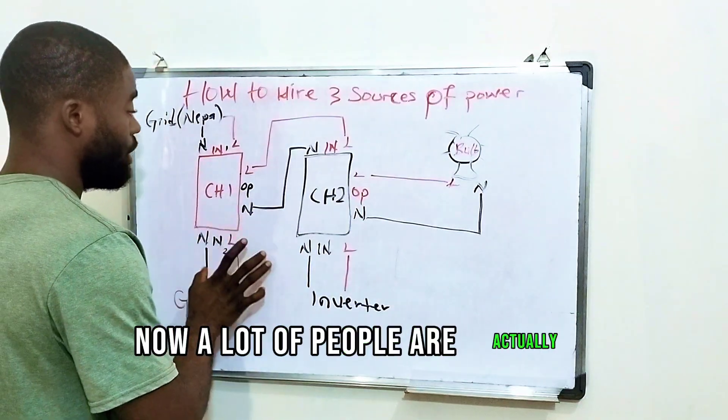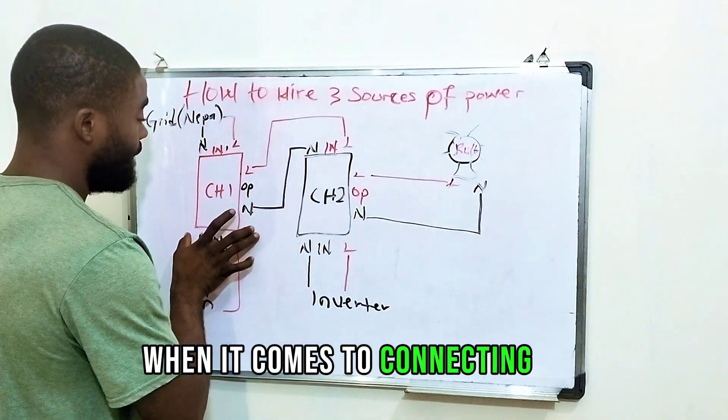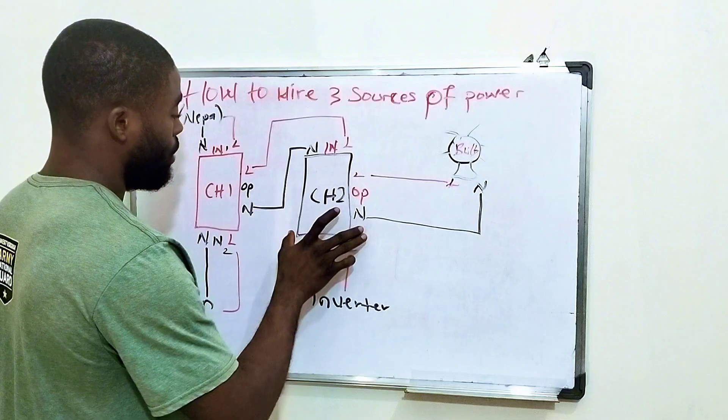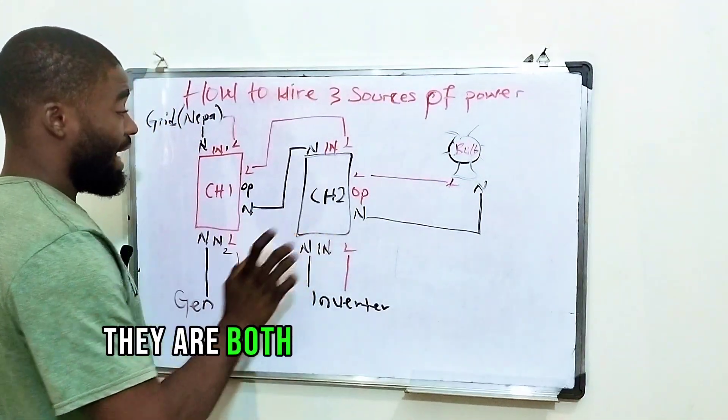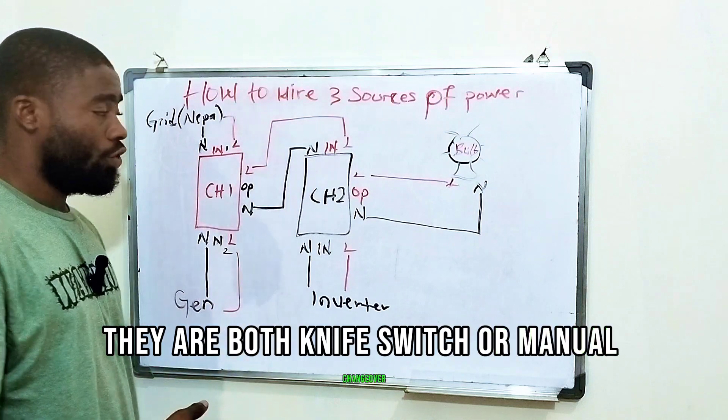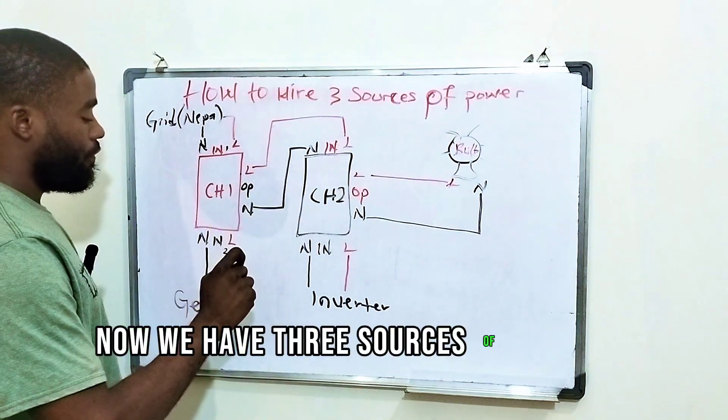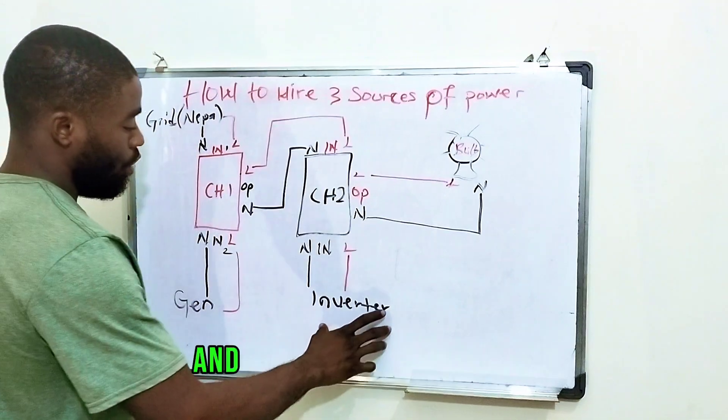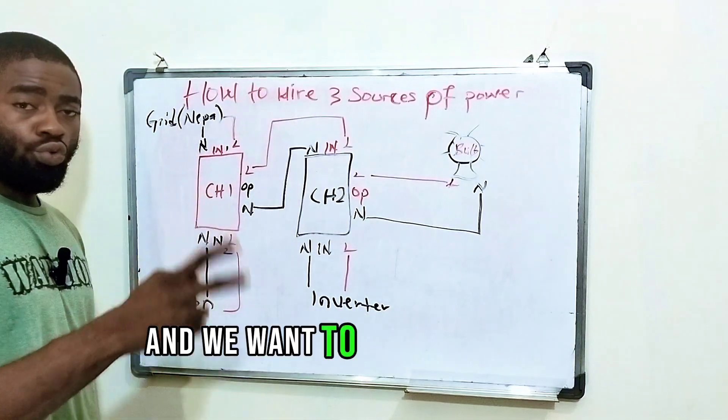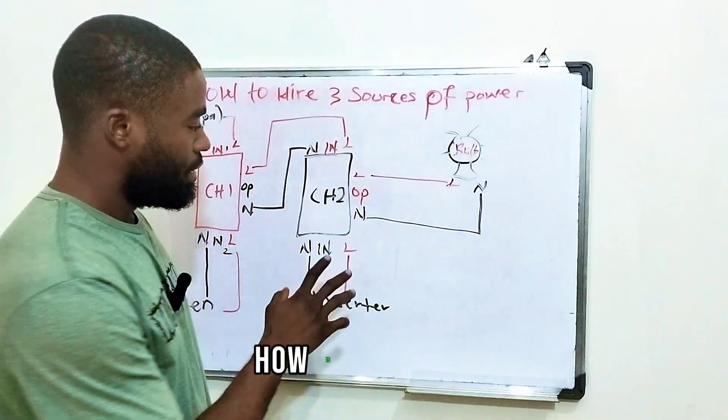Now a lot of people are actually confused when it comes to connecting the manual or knife changeover. Here we have changeover one and we have changeover two. They are both knife switch or manual changeover. Now we have three sources of light: we have generator, we have NEPA which is grid, and we have our inverter, and we want to use two manual changeovers. How is this done?